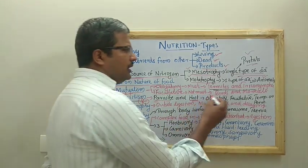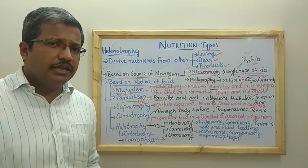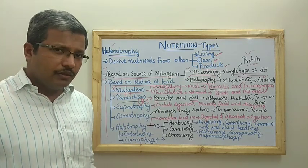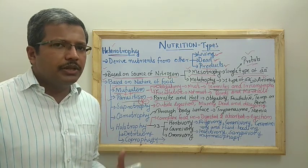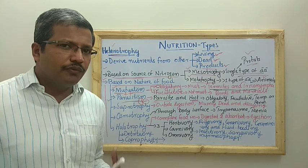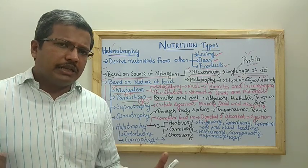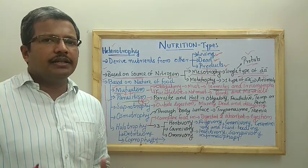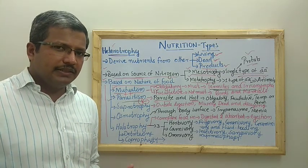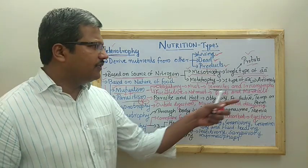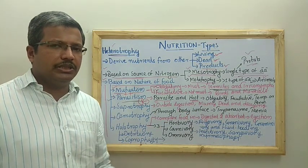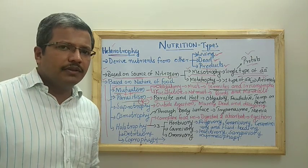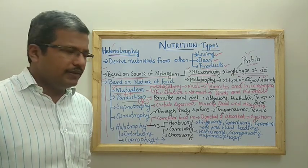We can classify parasitism into obligatory and facultative, as well as temporary and permanent. Obligatory parasitism means the parasite cannot live without the host. Facultative means if the host is not available, the parasite can switch to a free-living mode. Temporary parasites come and go - like the mosquito. Permanent parasites always remain associated with the host - like hair lice, which are always found on the host as ectoparasites.